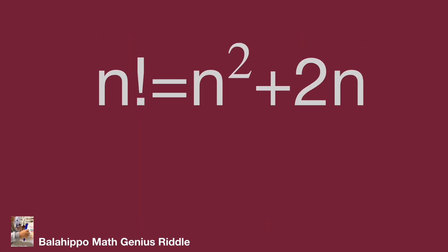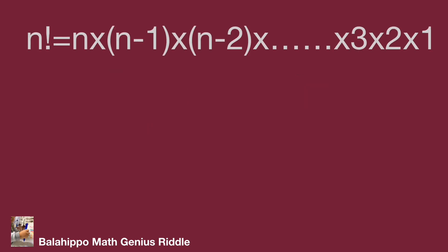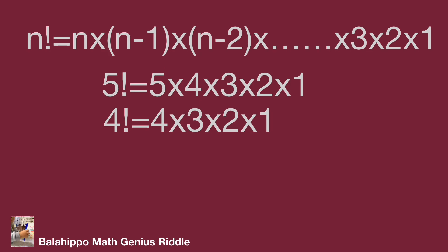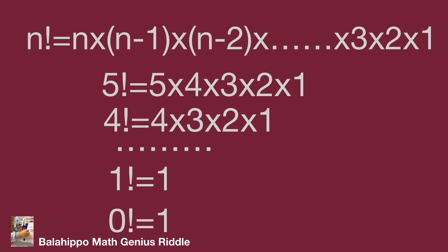The question is n factorial equal to n squared plus 2n. Firstly, let's talk about n factorial. What is factorial? n factorial equals n times (n minus 1) times (n minus 2), dot dot dot, times 3 times 2 times 1. For example, 5 factorial equals 5 times 4 times 3 times 2 times 1. Similarly, 4 factorial equals 4 times 3 times 2 times 1. The same operation gives us 3 factorial and 2 factorial. And 1 factorial equals 1. As for 0 factorial, it may not be well defined, but we treat 0 factorial equal to 1.